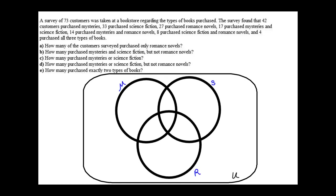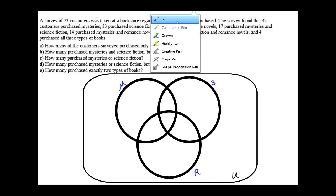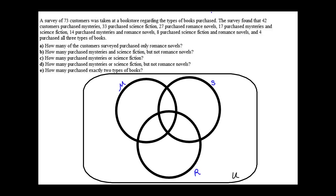Here we have another application problem where we need to use a Venn diagram. A survey of 73 customers was taken at a bookstore regarding the types of books they purchased. The survey found 42 purchased mysteries, 33 purchased science fiction, and 27 purchased romance novels. 17 purchased mysteries and science fiction, 14 purchased mysteries and romance novels, 8 purchased science fiction and romance, and 4 purchased all three types of books.